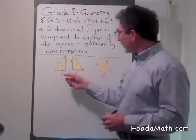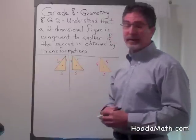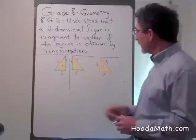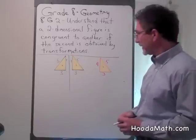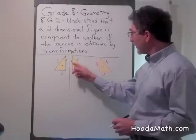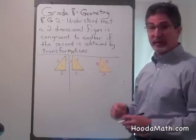I start out with a 3 by 4 by 5 triangle. If I reflected across this mirror image line, I still have a 3 by 4 by 5 triangle.